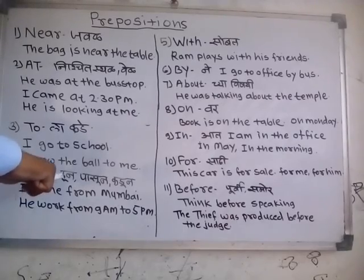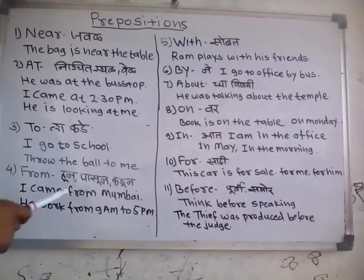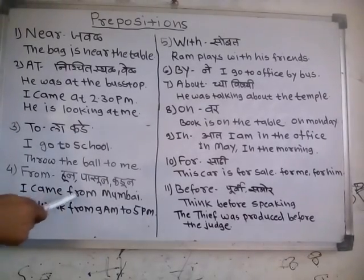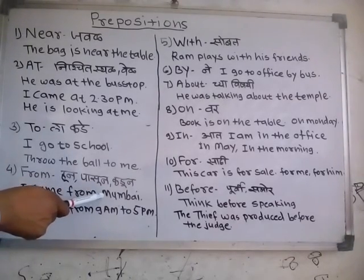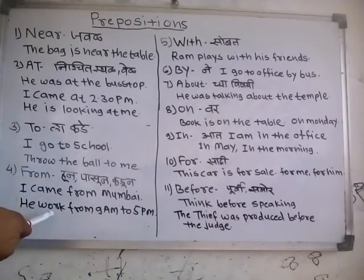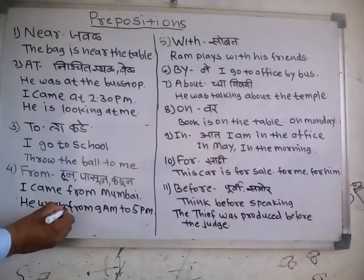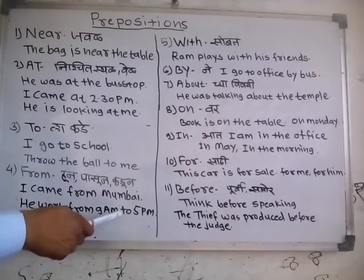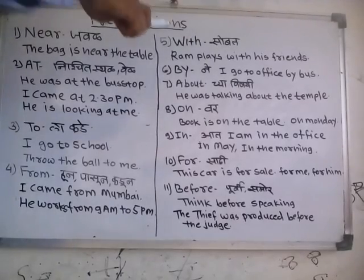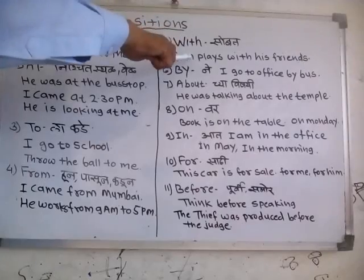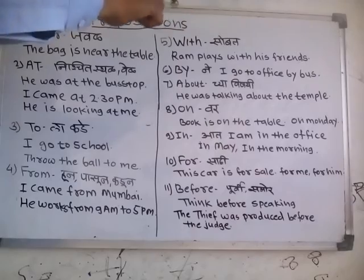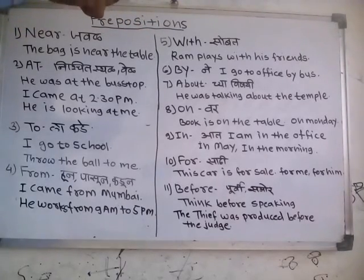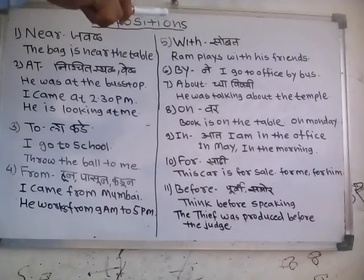The next is 'from'. 'From' shows a particular place as well as a particular time period. For example: I came from Mumbai — showing a particular place. It can also show a time period like 9 a.m. to 5 p.m. The next preposition is 'with'. For example: Ram plays with his friends. I go to school with my friends. In this way you can make more sentences using 'with' as a preposition.